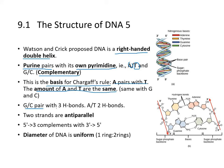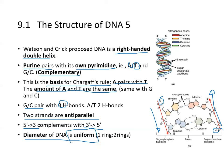G pairs with C using three hydrogen bonds, whereas only two hydrogen bonds form between thymine and adenine. The two strands of DNA are anti-parallel, meaning the five-prime to three-prime strand complements the three-prime to five-prime strand. The diameter of the DNA is uniform because there is always one single-ring pyrimidine pairing with one double-ring purine.